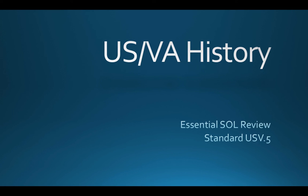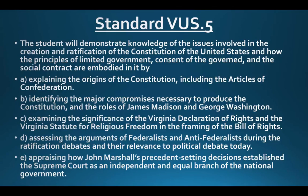This video is a review of the USVA history curriculum for the state of Virginia, and it will cover standard number five. The standard reads: the student will demonstrate knowledge of the issues involved in the creation and ratification of the Constitution of the United States, and how the principles of limited government, consent of the governed, and the social contract are embodied in it.